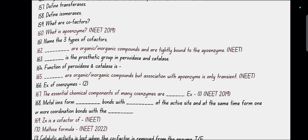What are cofactors? Cofactors are non-protein constituents bound to the enzyme to make the enzyme catalytically active. What is an apoenzyme? The protein portion of the enzyme is called the apoenzyme. Name three types of cofactors: prosthetic group, coenzyme and metal ions. Prosthetic groups are organic compounds and are tightly bound to the apoenzyme. Heme is the prosthetic group in peroxidase and catalase. Function: breakdown of H2O2 to water and oxygen.